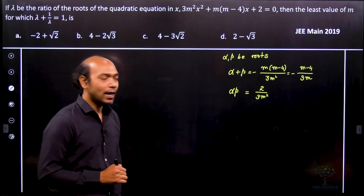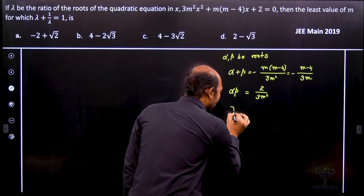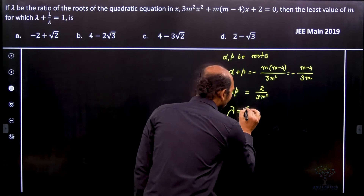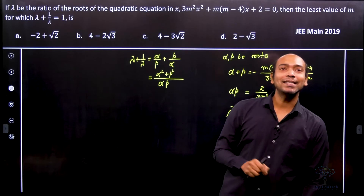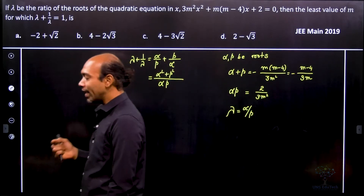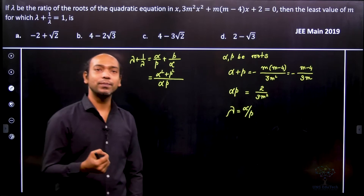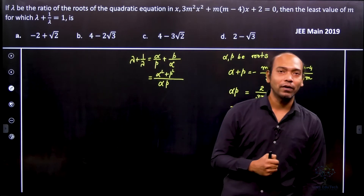In this particular problem, lambda is equal to alpha divided by beta. Now let's calculate what is lambda plus 1 by lambda. So lambda plus 1 by lambda is equal to alpha divided by beta plus beta divided by alpha, which implies it's equal to alpha squared plus beta squared divided by alpha beta.